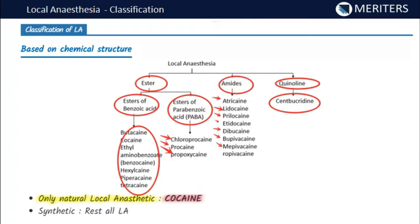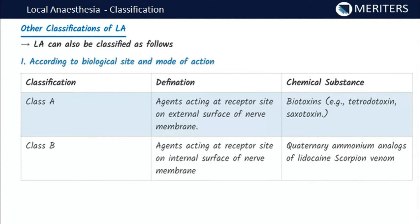In the quinoline group, we have only centbucridine. These are the important members of local anesthesia to remember, as they form the basis for many exam questions. Note that cocaine is the only natural local anesthetic — all others are synthetic. So another classification can be based on natural versus synthetic.